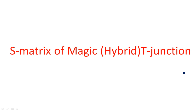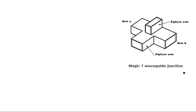In this video, I am going to calculate and derive the S-matrix parameters of Magic T or Hybrid T junction. The Magic T waveguide junction has four ports. Before the calculation of S-matrix parameters, we should know the size of the S-matrix, which is completely dependent upon the number of ports. Magic T is a combination of both E-plane T junction and H-plane T junction, that's why it has four ports.